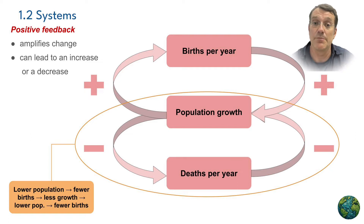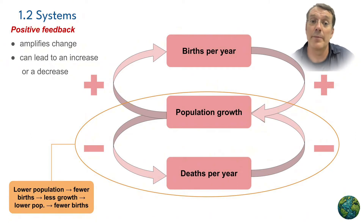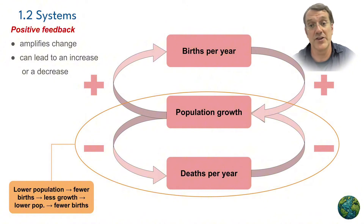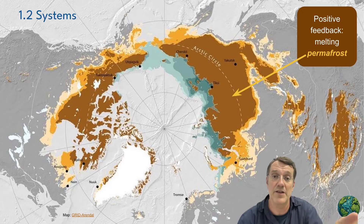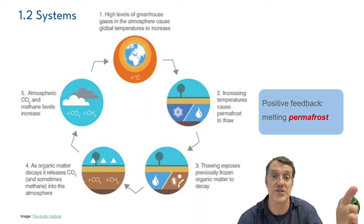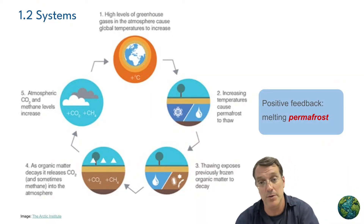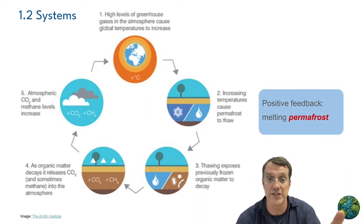For example, in population dynamics, a declining population might lead to fewer births, and fewer births reduces the population further — continuing in a downward spiral. In climate systems, melting permafrost releases greenhouse gases, which cause more warming and melt more permafrost to release even more greenhouse gases.